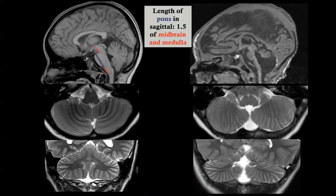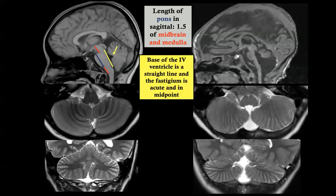There are a few key things that, once you look for them, make it easy to distinguish normal from abnormal. First, the length of the pons on sagittal midline must be between 1.5 and 1.8 times the midbrain and medulla oblongata. If this ratio is abnormal, you have a patterning defect. Second, the base of the fourth ventricle is a straight line, and the apex — the fastidium — must be acute. If it is obtuse, you have a malformation.